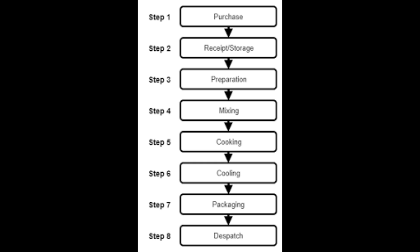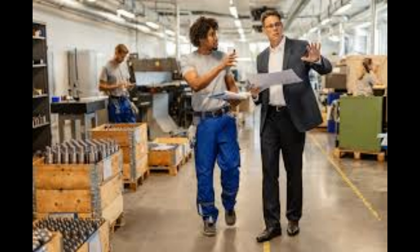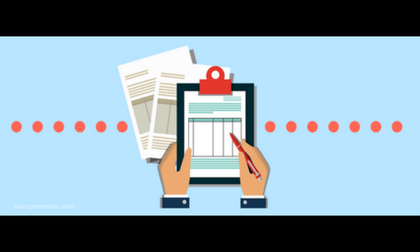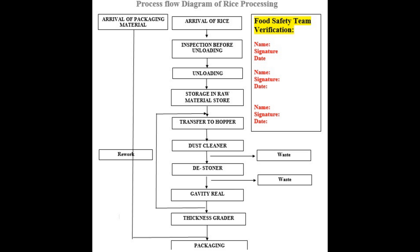How does the food safety team confirm the accuracy of the flow diagram? All members of the food safety team go on-site, either as a group or individually, with the process flow diagram and verify each step against actual on-site practices. A record of this on-site verification must also be maintained, which may be in the form of notifications or signatures on the process flow diagram indicating that the team has verified the process flow.